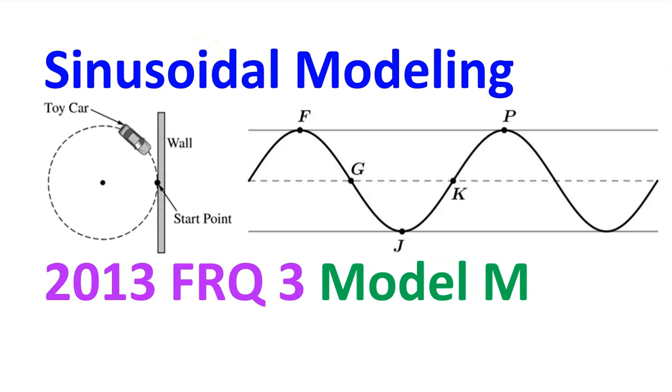On the AP exam, there will be four free response questions. This video is modeled after FRQ number three, about modeling real-world situations using sine or cosine functions. Let's pretend it's from the 2013 exam. If you appreciate this content, please give it a like.